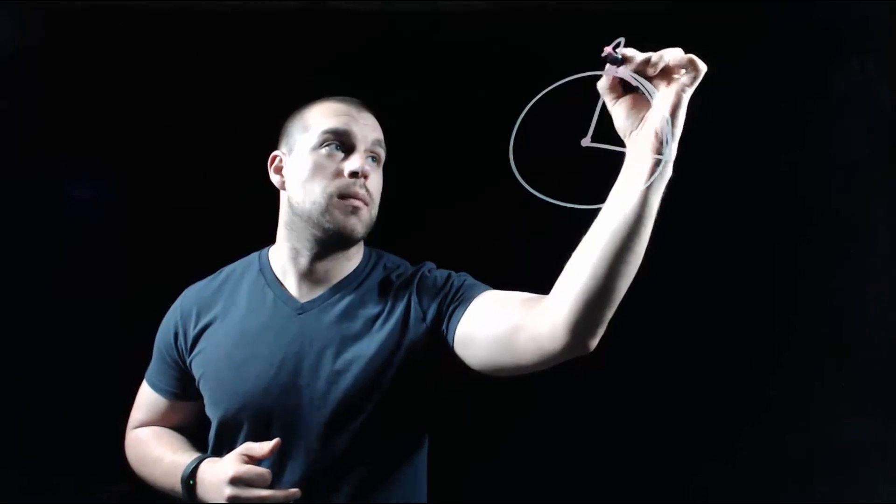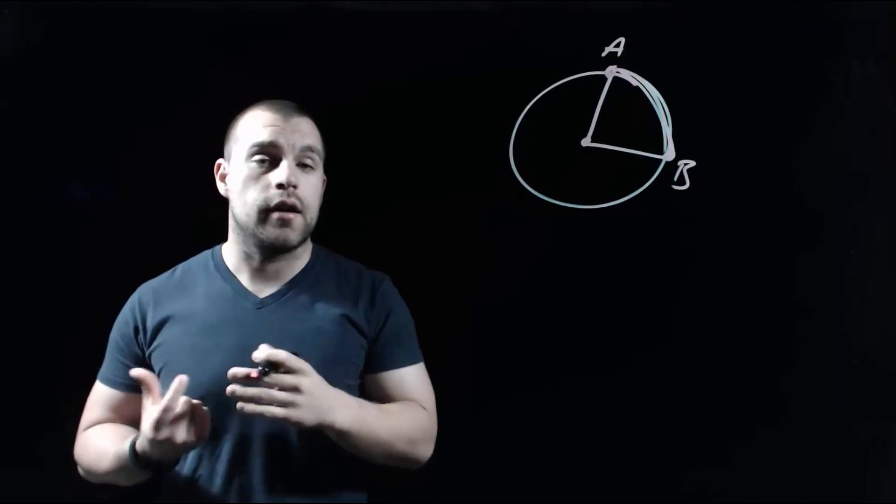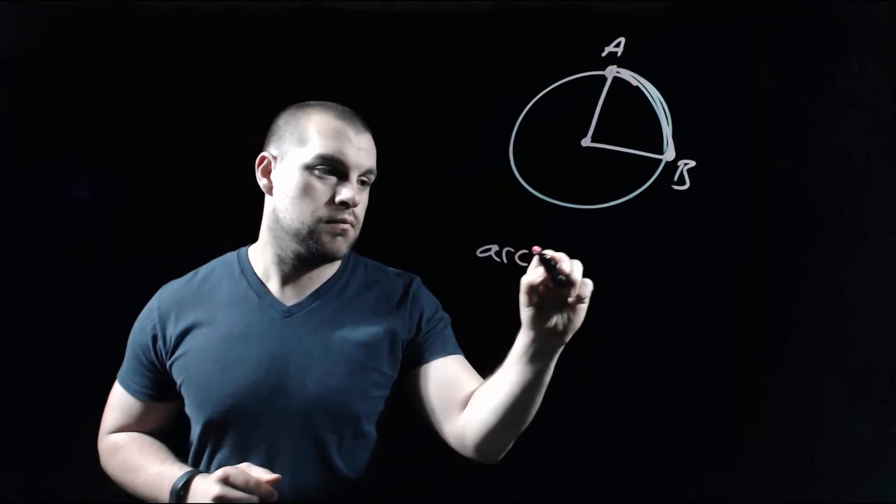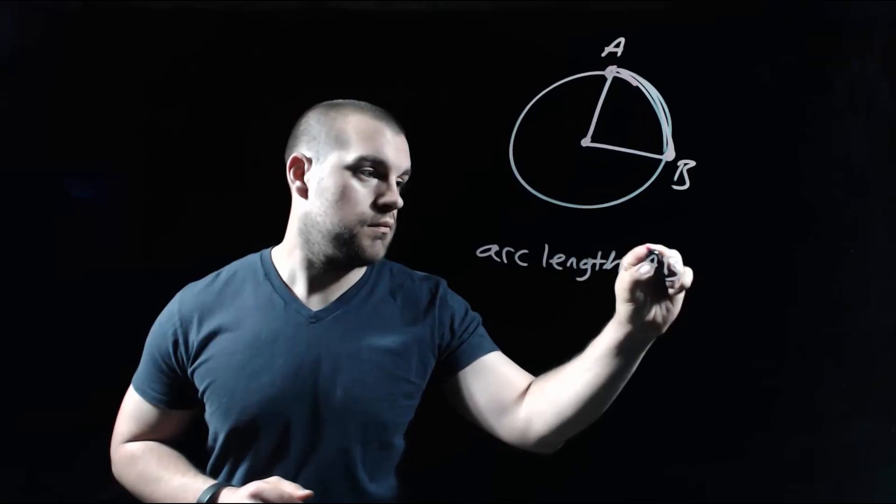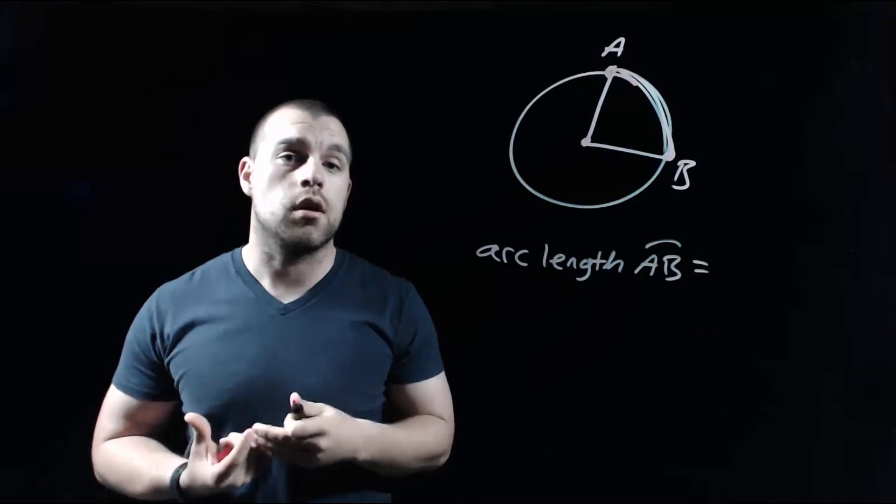So let's give these points a couple names so that we can talk about these things. That'll be point A, and down here we'll have point B. Now if we want to find the length of the arc AB, then we need to know some information about what that measure of the arc is.